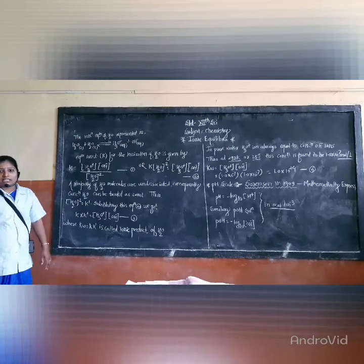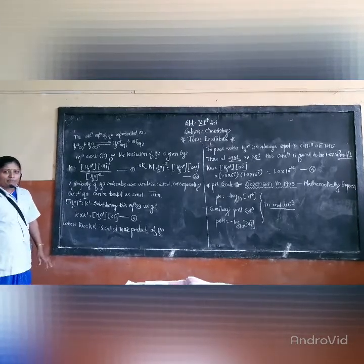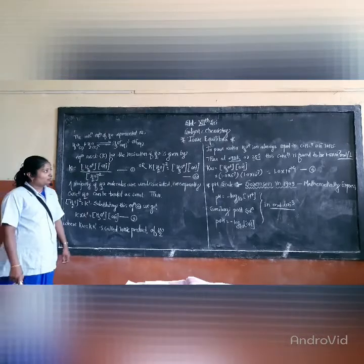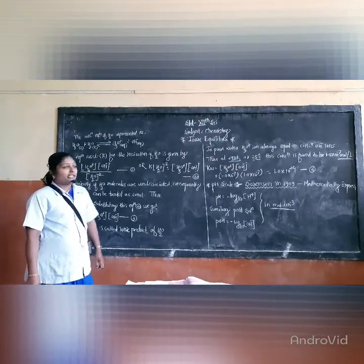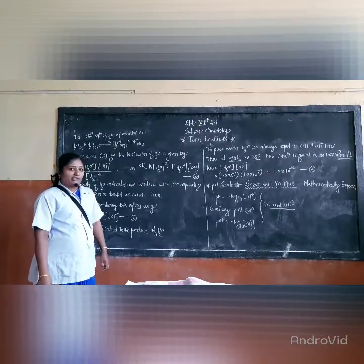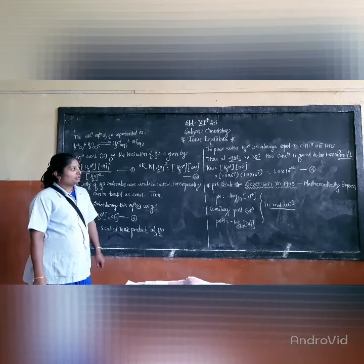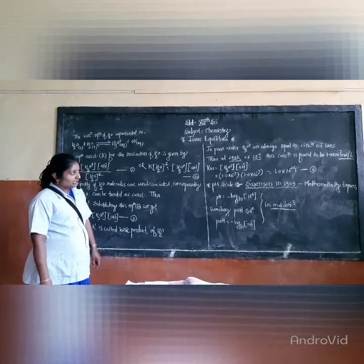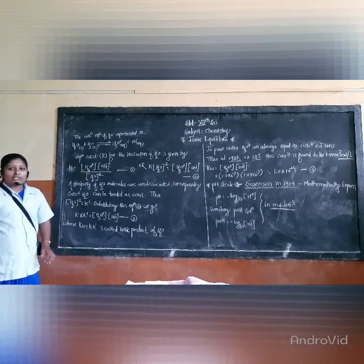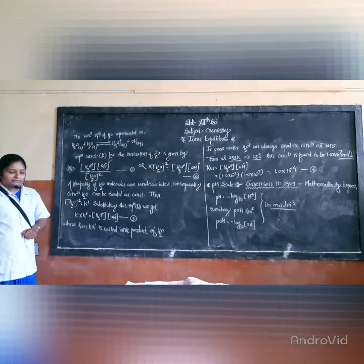KW is the ionic product of water. In pure water, the concentration of H3O⁺ ions is always equal to the concentration of OH⁻ ions. This product of hydronium ion concentration and hydroxyl ion concentration is called the ionic product of water.